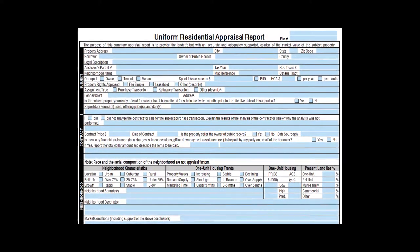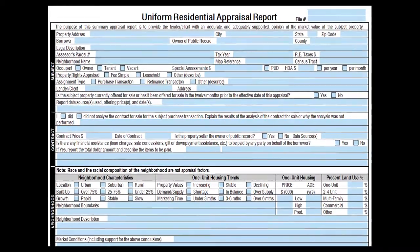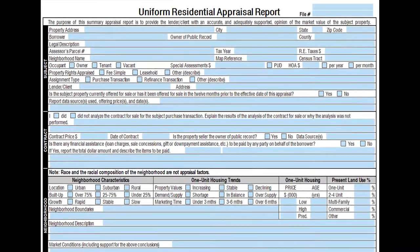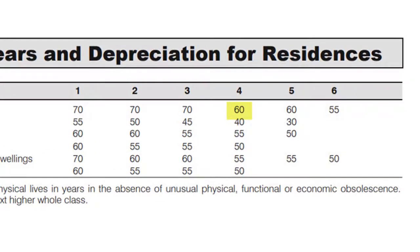The 1004 and other appraisal forms all assume economic age-life depreciation. Economic age-life depreciation calculations involve three variables and one assumption. The assumption is the number of years of economic life. Because Solomon licenses cost data from National Building Cost, we'll begin with the economic age assumption National Building Cost makes in developing its cost data. Notice how economic life is related to quality: structures of the highest quality have a 70-year economic life, while the lowest quality has a lifespan of only 55 years.